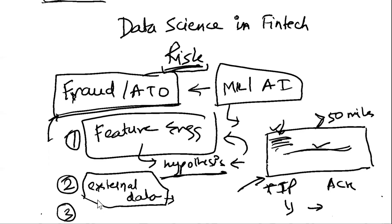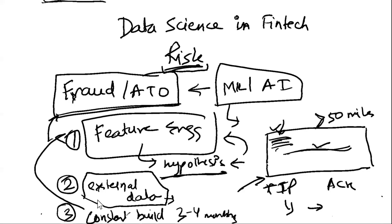Of all model types, fraud models deteriorate very fast — because fraudsters learn your behavior as you learn theirs. They notice when transactions aren't going through because you've put in a mechanism to catch them. Your fraud model can deteriorate in three to four months, or even faster depending on the business. More than anywhere else, this requires a constant build cycle, which is a real application of machine learning where you are learning continuously.